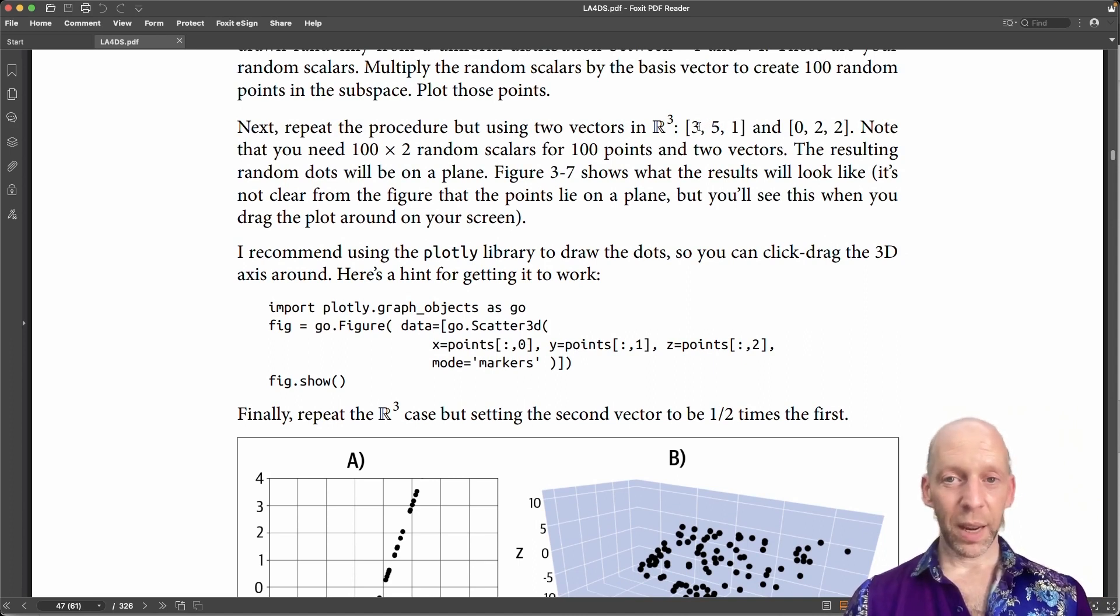We cannot just take one scalar, or 100 of random selections of one scalar, because we have two vectors. So we need a pair of scalars, one scalar randomly chosen to multiply this vector and another randomly chosen scalar to multiply this vector. So that means we will have a 100 by 2 matrix or a set of pairs for these two vectors.